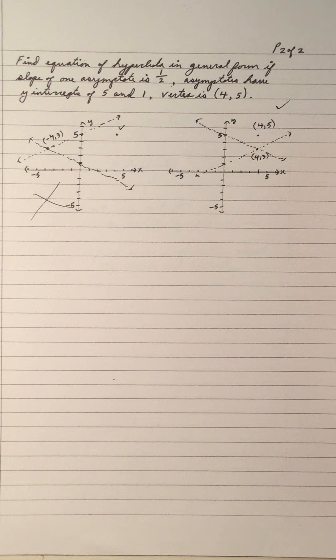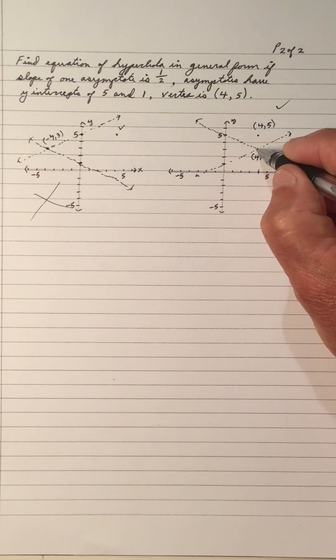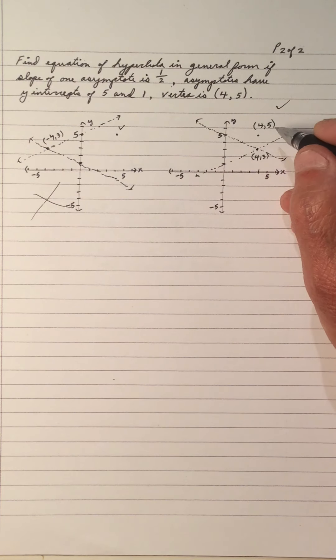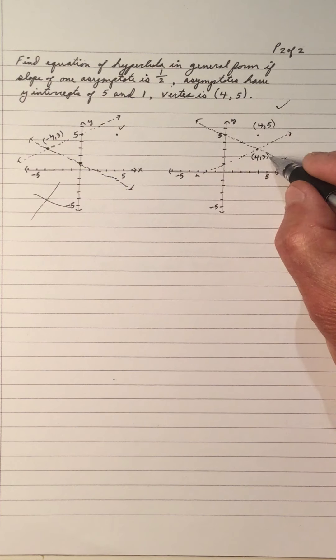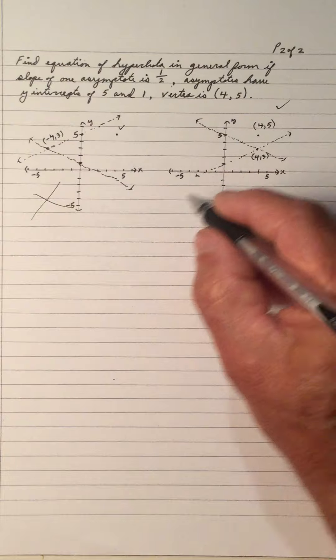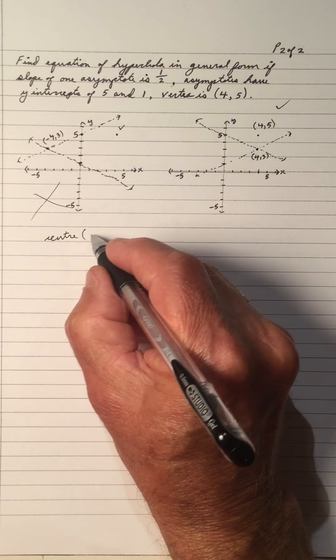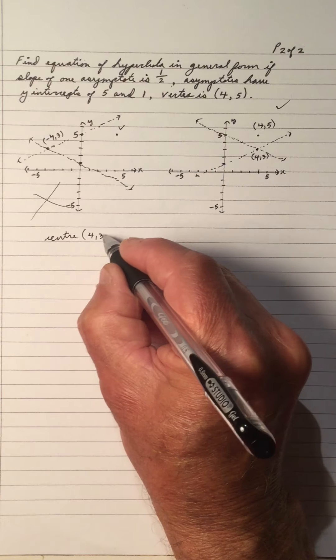Now, if we have this point, so by graphing it, we found these points. But another way is that we have the point of intersection. So the center, so the graph helps us. So the center is (4, 3).